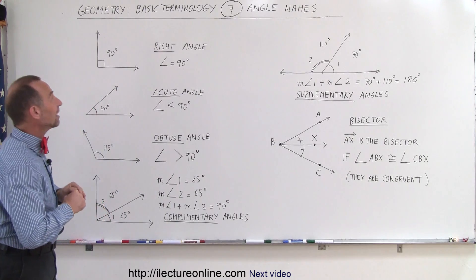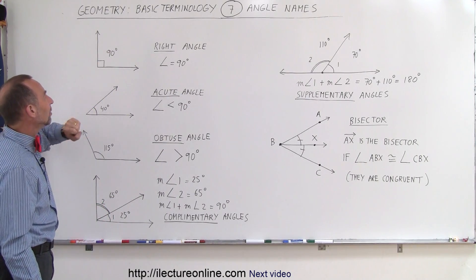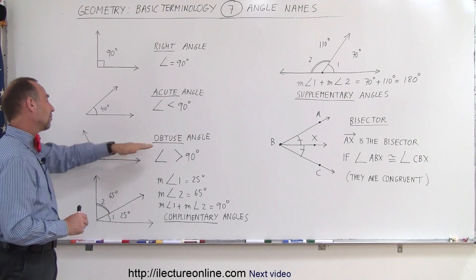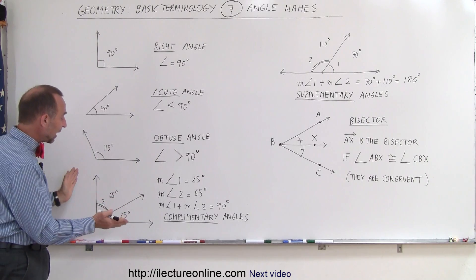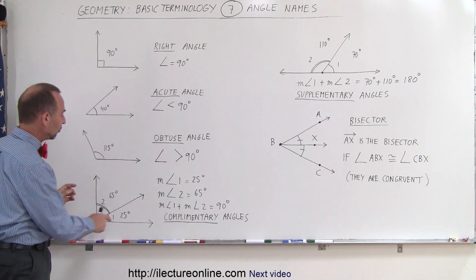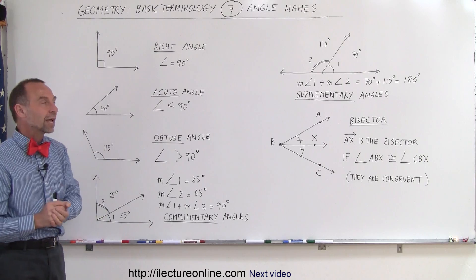So in summary, the different names that we use for angles is we have the right angle, where the angle is 90 degrees. We have an acute angle, where the angle is less than 90 degrees. We have an obtuse angle, where the angle is greater than 90 degrees. And then if we have two angles that share a common side and they both add up to 90 degrees, 25 plus 65 is 90, then those are considered complementary angles.